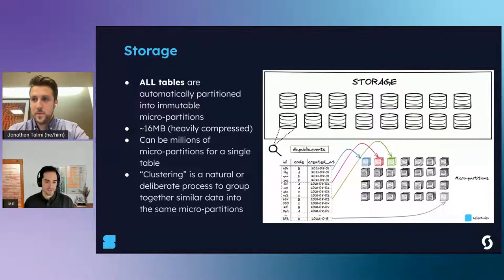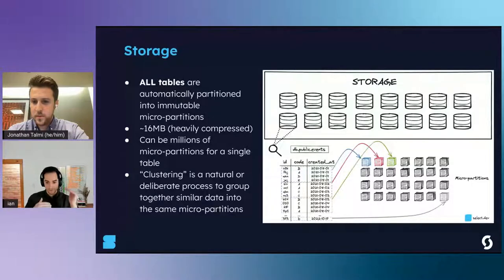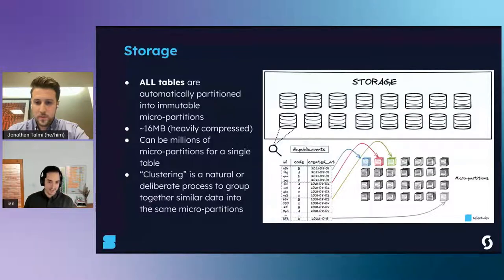Looking at an example events table with a created_at column sorted in ascending order: when Snowflake creates this table, it takes the first chunk of data, writes it to one micro-partition, moves down, takes the next chunk, writes it to the next, and so on. What you get is co-location of data, where within a single micro-partition you'll typically have records with the same created_at timestamp. This becomes very useful when you have queries with a WHERE filter or a join on that column.